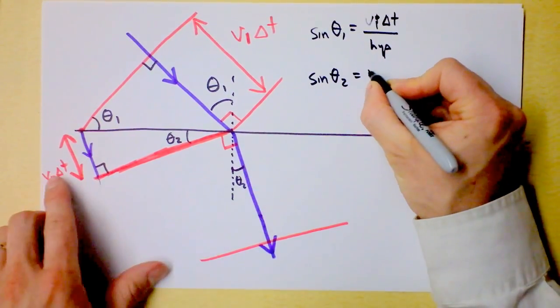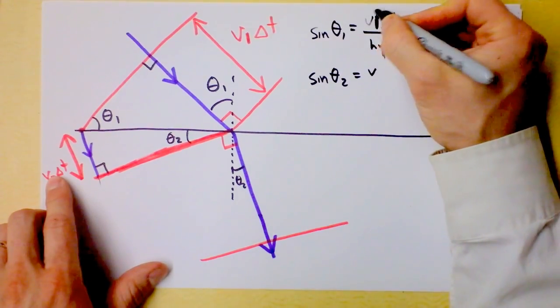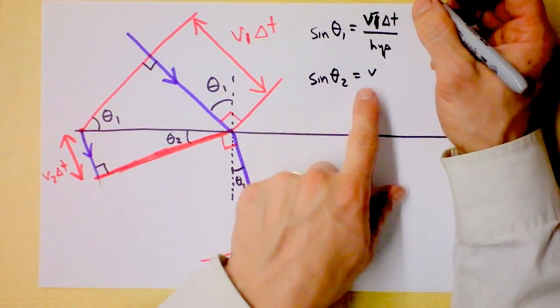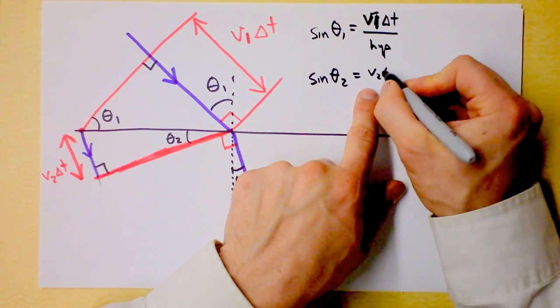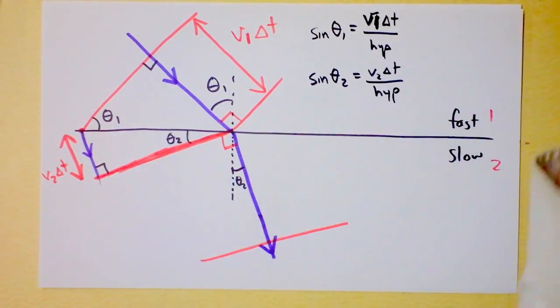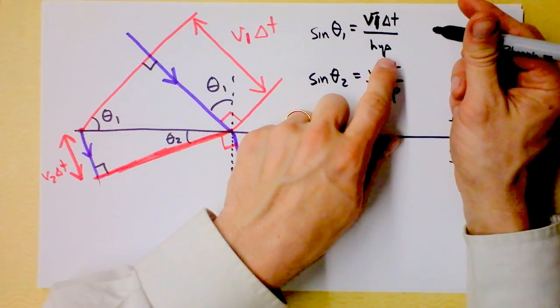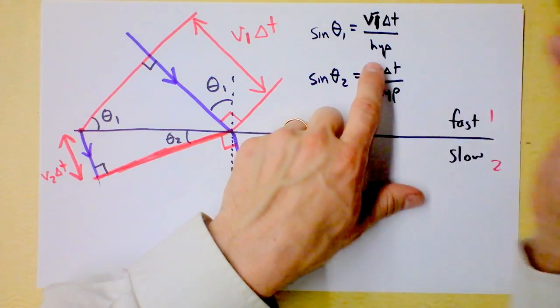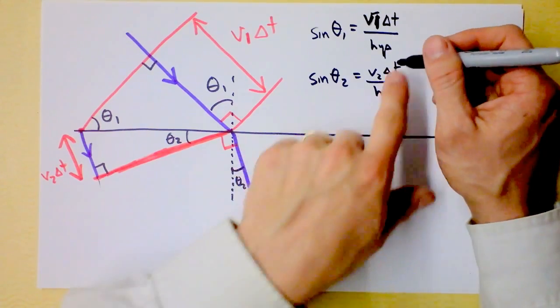It's going to be, I mean to say v1, the speed on side 1 times delta t, and this side's going to be the speed of side 2 times delta t, and I have to divide it by the hypotenuse. Now check this out. I could solve this for hypotenuse, or I could solve it for 1 over hypotenuse, I think that's what I'm going to do.